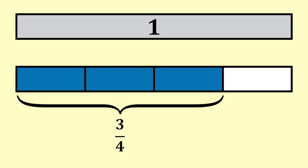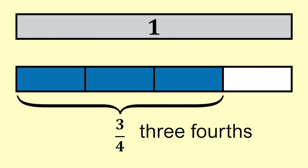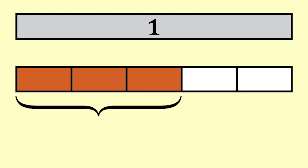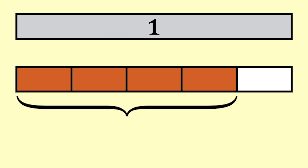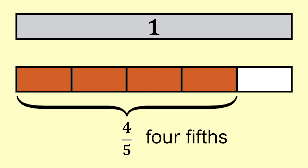Three out of four is three fourths or three quarters. Three out of five is three fifths. Four out of five is four fifths.